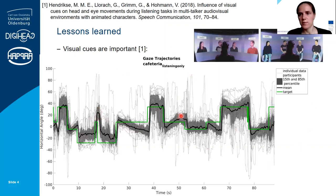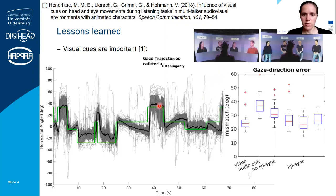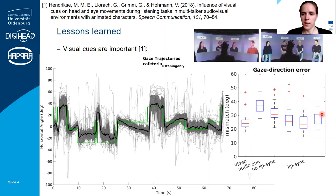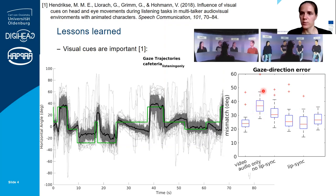In the cafeteria condition with virtual characters, if we look at the error between the direction participants were looking and the actual position of the active speaker, we see that for the video condition and the condition with animated characters that had lip movement, this is pretty much the same — they look about as accurately at the active speaker. However, for the audio-only condition, the error is much larger — they don't really follow the active speaker anymore and mostly look straight ahead. If the animated characters were not moving their mouth, the error was also larger.